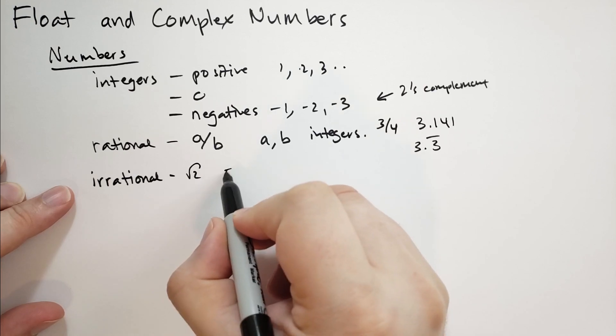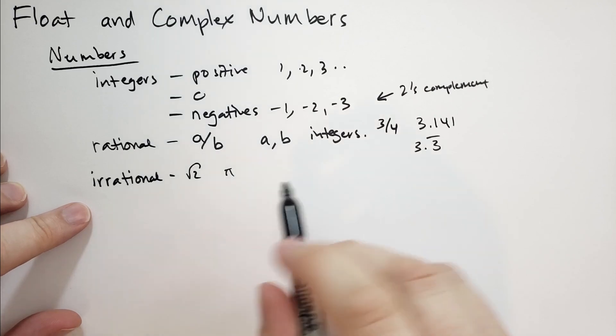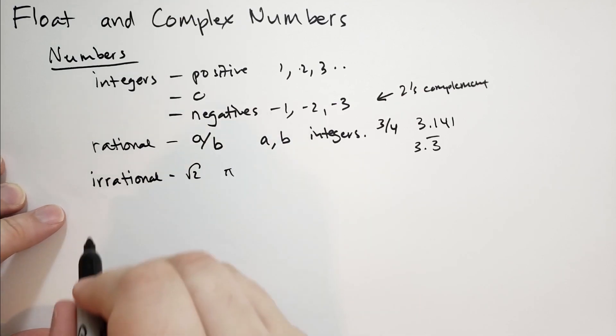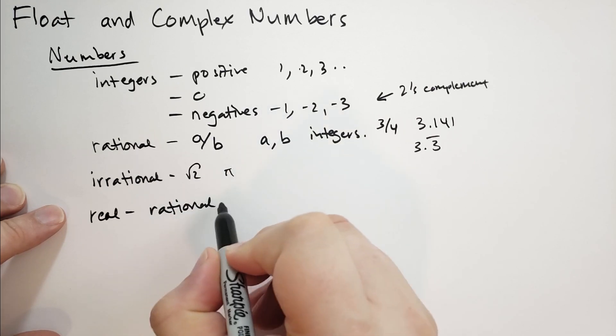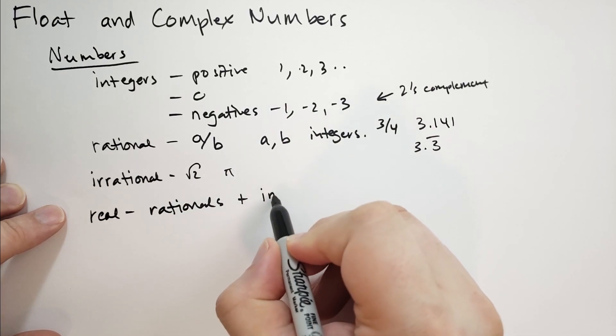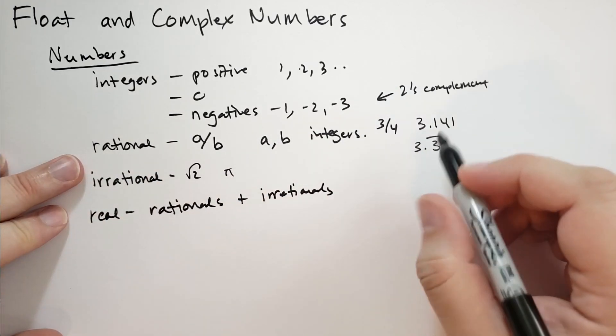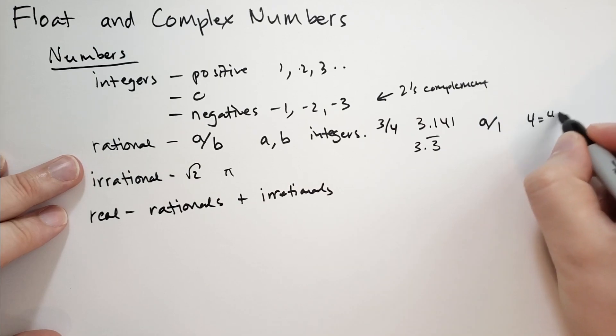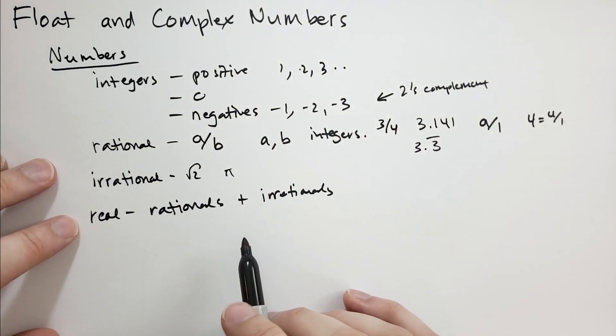And it also includes numbers that might have repeating decimal places. So 3.3 repeating - this is actually three and a third. Those are not enough to represent all the numbers we might encounter like the square root of two and pi. And so the irrational numbers are numbers that cannot be represented by a ratio of integers. So we can't put them in decimal form, we can't use repeating, we can't use fractions. And so we have to use symbols to represent them like this. And then if we take the real numbers, this is basically all the rationals plus the irrationals.